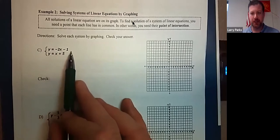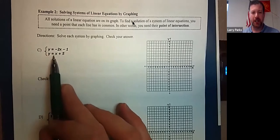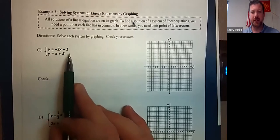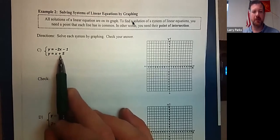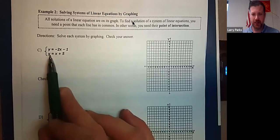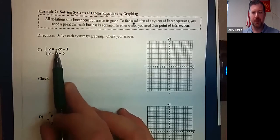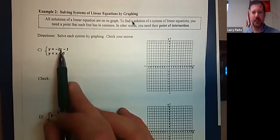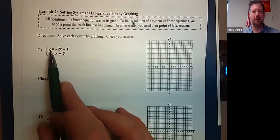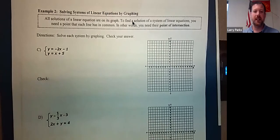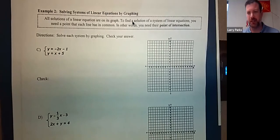y is negative 2x minus 1, and we have y is x plus 5. So this means what number plus 5 equals another number, and what is negative 2 times the number minus 1 to get another number. We're trying to find a coordinate that makes both of these true.